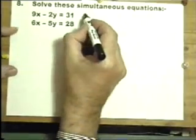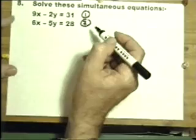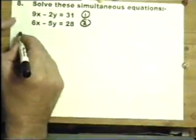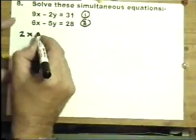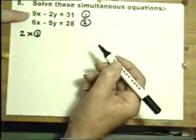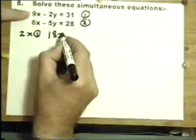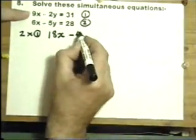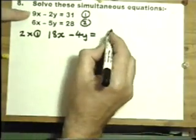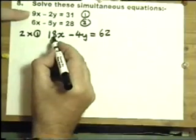Always label the equations and write down quite simply what you're doing. That tells the examiner I'm going to take this first equation and multiply it by 2. So I've got two 9s, two 2s, and the two 31s that sometimes gets forgotten. So I've turned that into an 18.